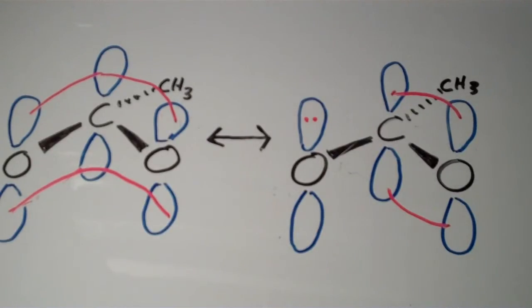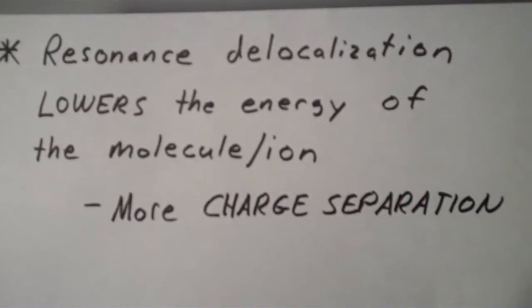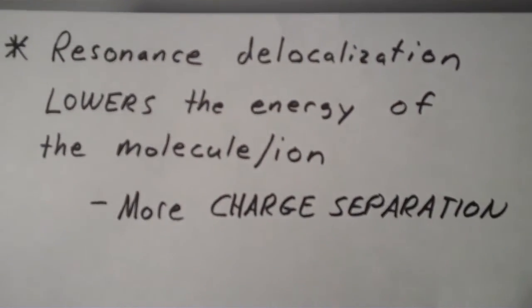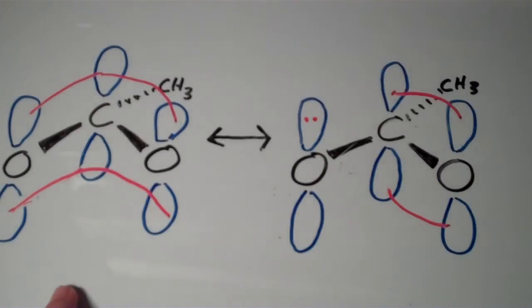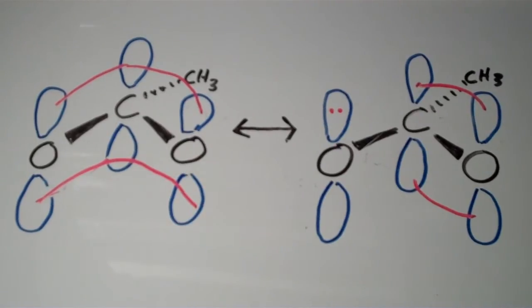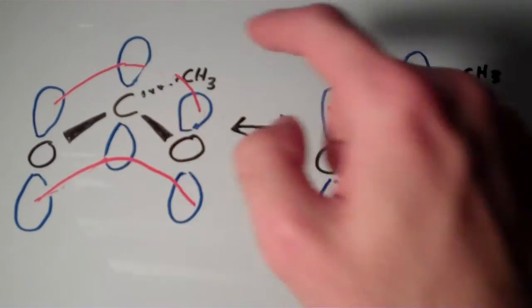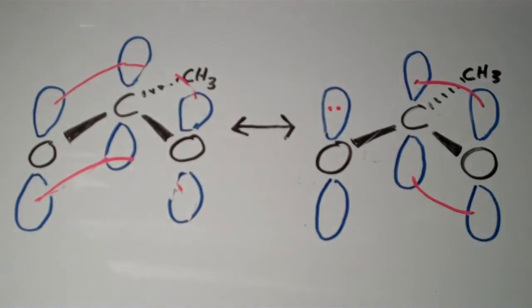So what is so significant about the electron delocalization? Well, in terms of energetics, resonance delocalization lowers the energy of the particular molecule or ion. So that means that the resonance hybrid of acetate ion, this thing right here, is actually lower in energy than either of the two resonance forms. So the resonance hybrid is lower in energy than each of the two resonance forms.